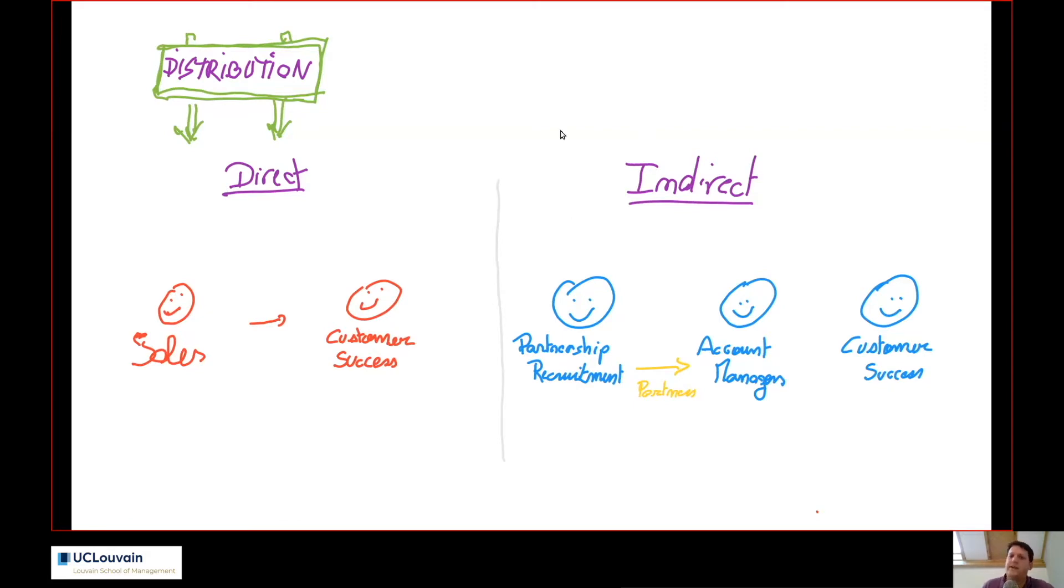The way it works for the indirect sales channel is we have a team called partnership recruitment, a team of salespeople who recruit partners. These partners, most of them are companies selling services on Odoo. They are managed by account managers. Typically, an account manager manages 50 partners. The goal of this account manager is for the partners to become better. And these partners, they sell projects to their clients. Every time they sell a project to their clients, the client goes live and starts using the system. Then we assign someone else, another sales team called customer success. We do the follow-up to be sure that the customer is happy and every year renews his contract.